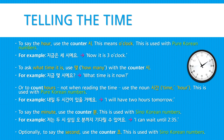To count hours — not when reading the time, but just saying how many hours for something — use the noun 시간, meaning 'time' or 'hour', with pure Korean numbers. For example: 내일 두 시간이 있을 거요 — I will have two hours tomorrow.